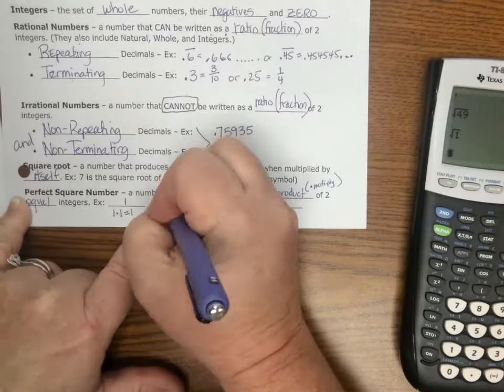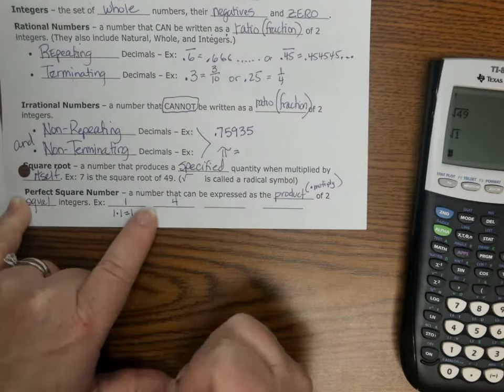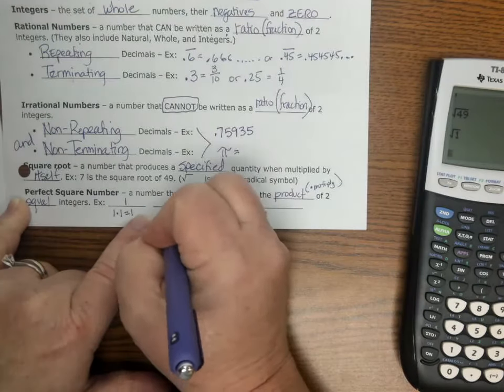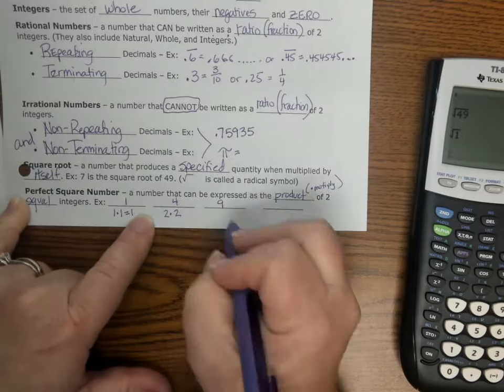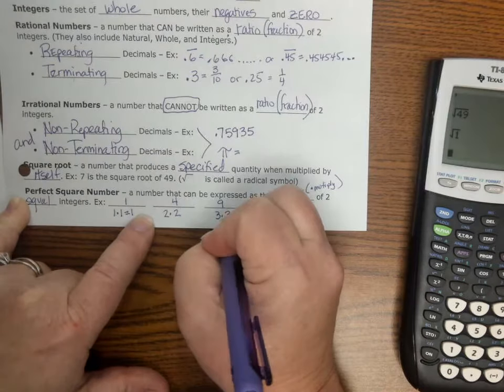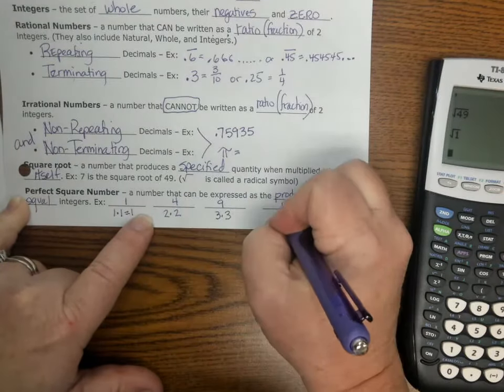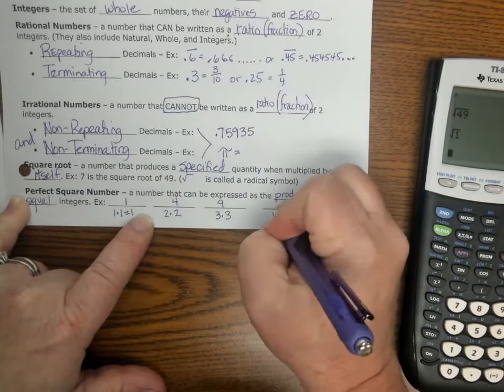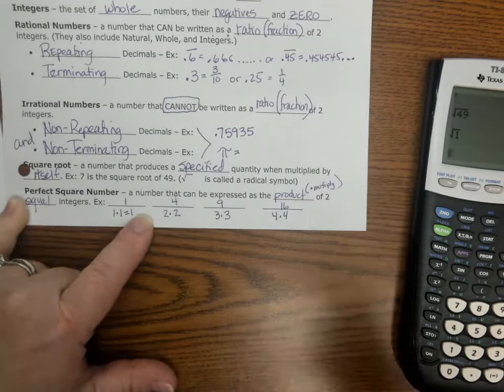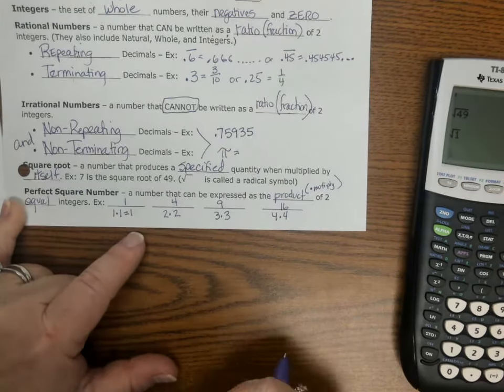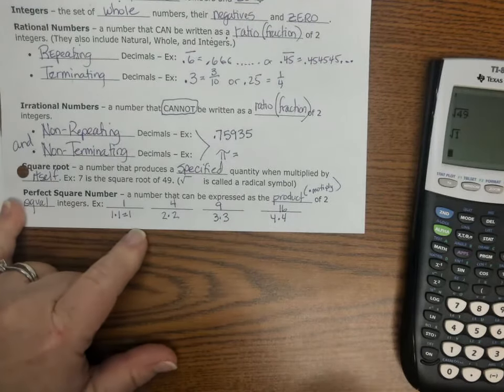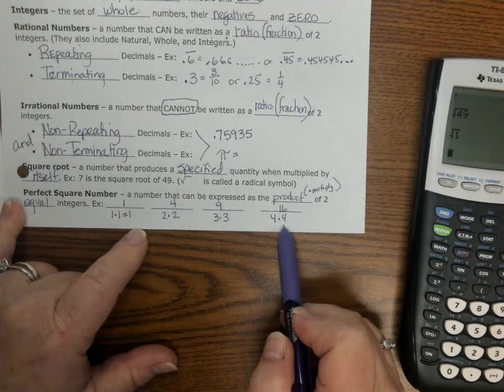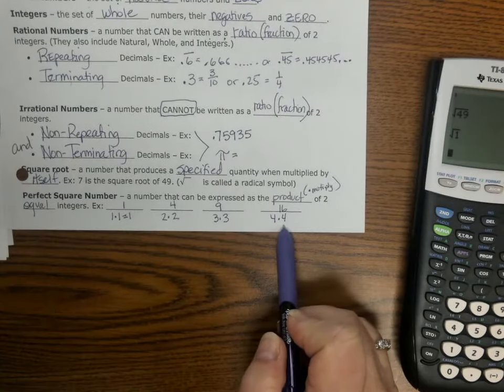4 is a perfect square, because that's 2 times 2. 9 is the next perfect square, 3 times 3. And another one would be 16, because it's 4 times 4. So it's two numbers, or one number multiplied times itself. And it is going to be a perfect square when you get a whole number back.